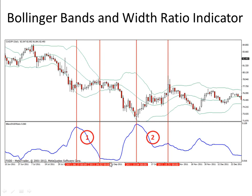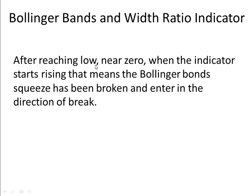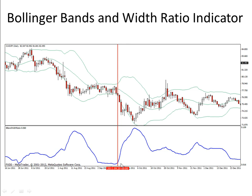When the indicator is at its lowest point and staying near zero for some time, always go for range trading. After reaching a low near zero, when the indicator starts rising, that means the Bollinger Band squeeze has been broken — enter in the direction of the breakout. You can see the Bollinger Bands Width Ratio indicator starts increasing at this point, the Bollinger Bands break, and you enter a sell trade at that point. This is how the indicator can be used in forex trading.